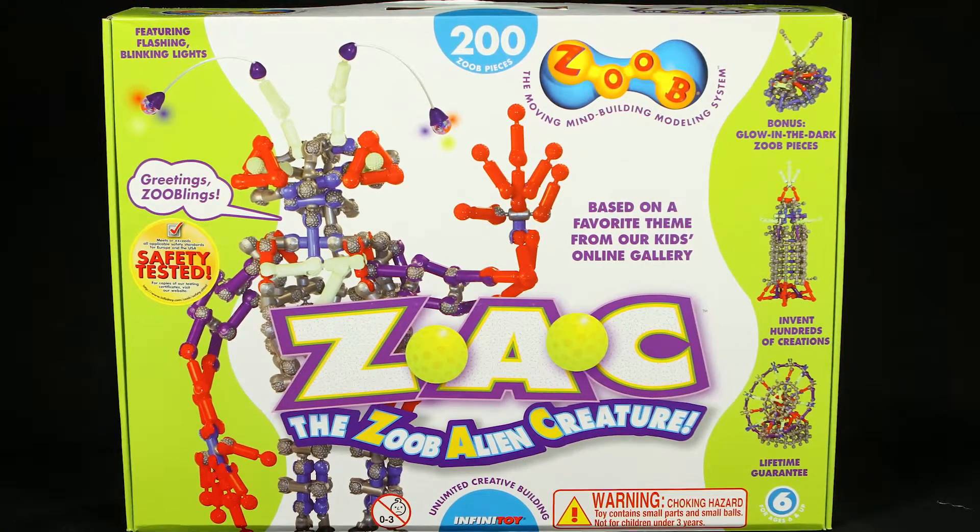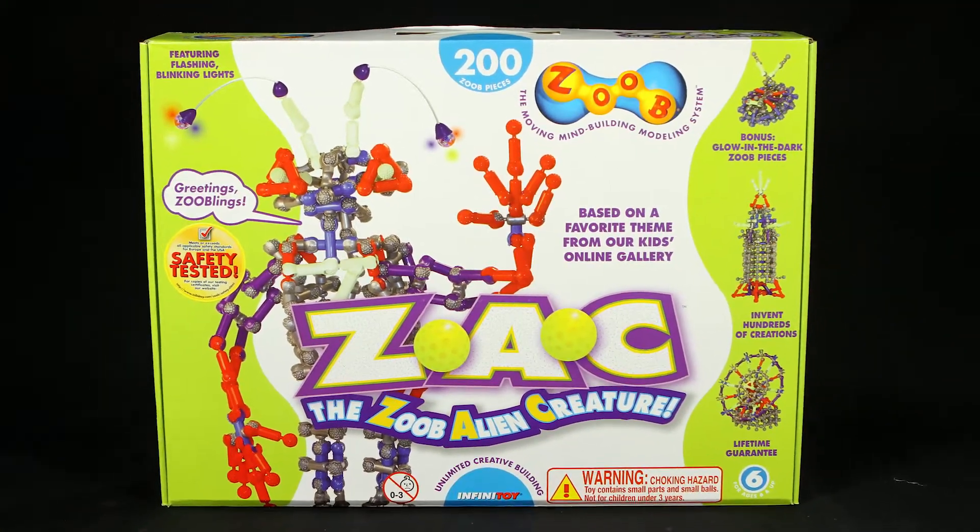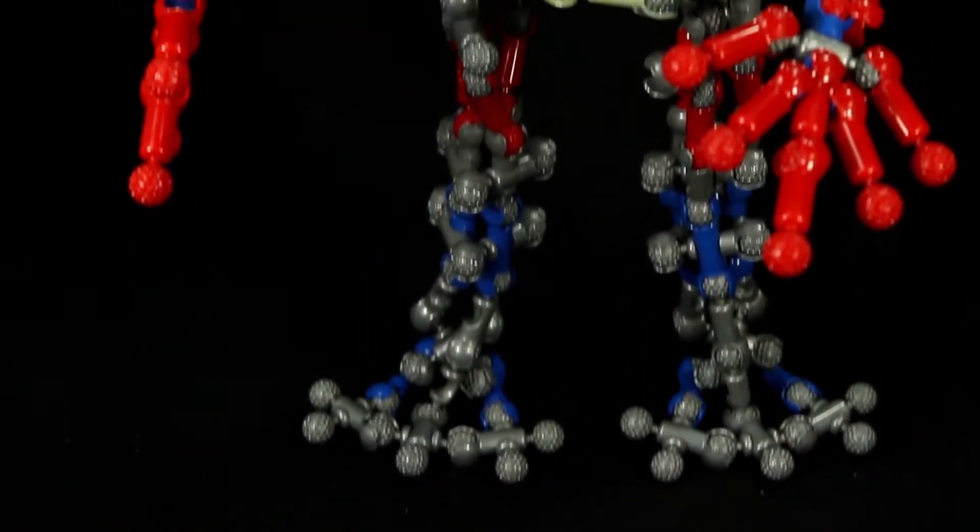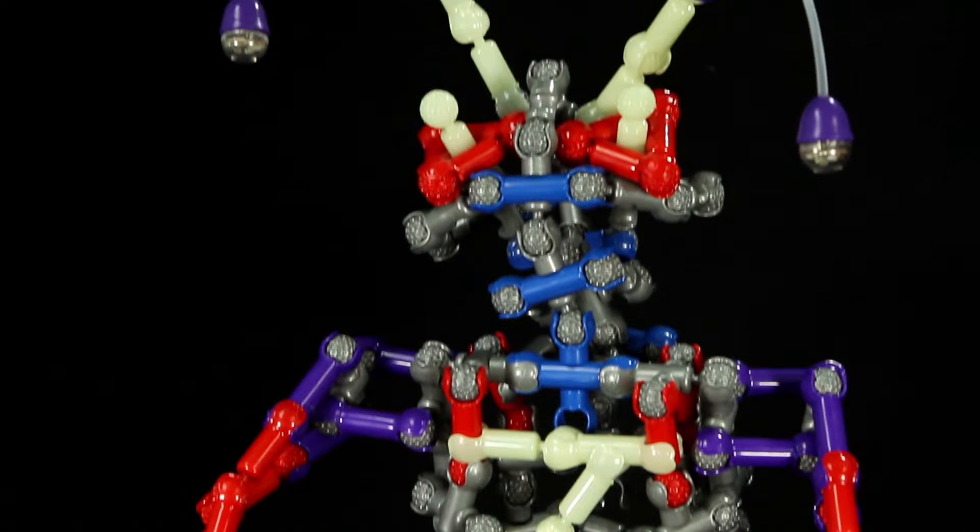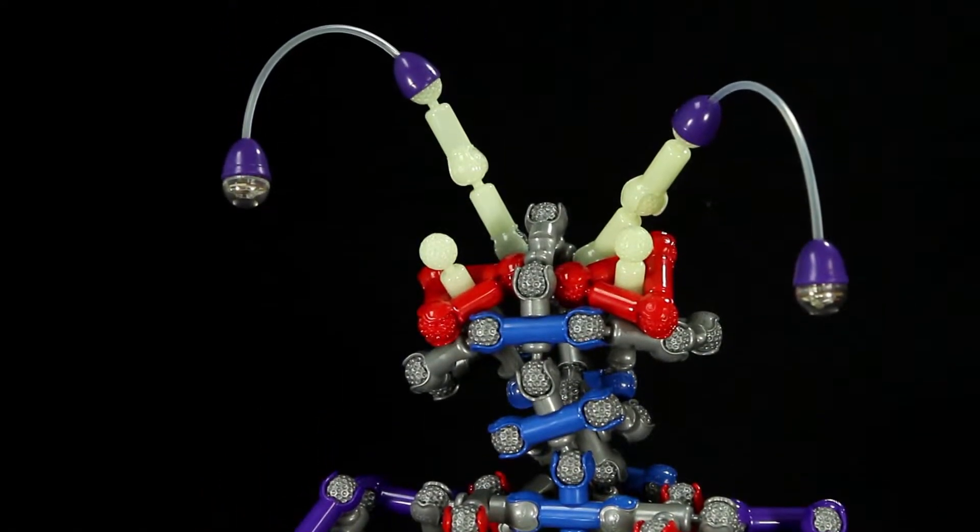Say hi to Zack, the Zoob alien creature you build yourself. Standing 2 feet tall, this amazing alien features 12 pieces that glow in the dark and have flashing blinking lights for deep space fun.